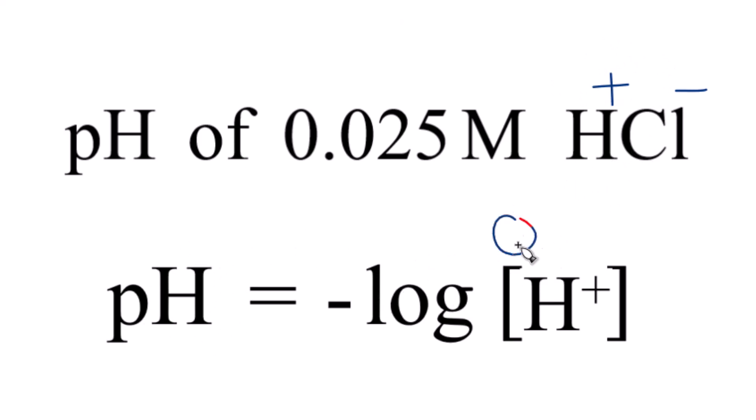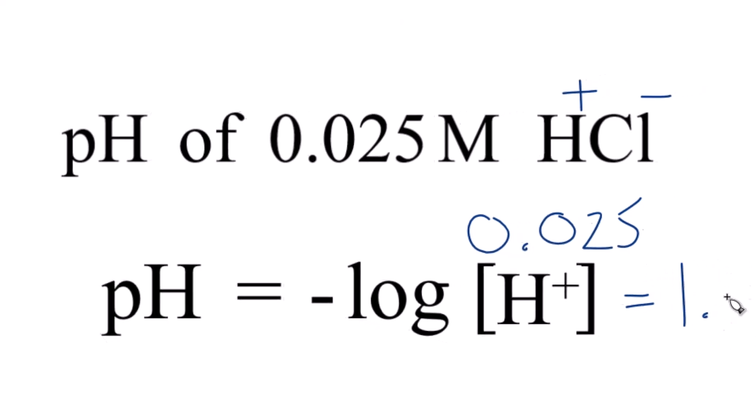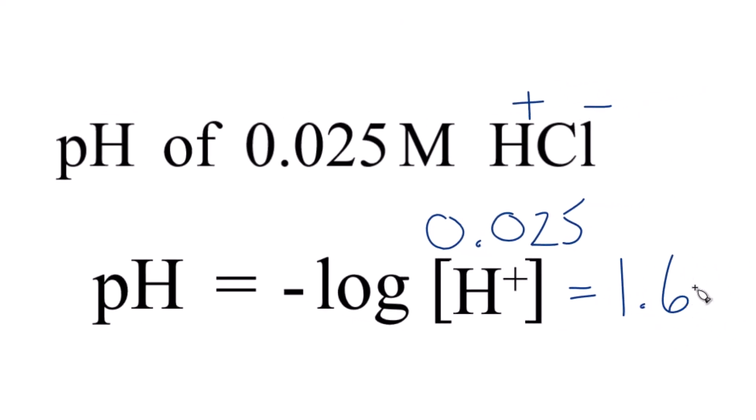So negative log of 0.025, we do that on our calculator, we get 1.6. So 1.6 is the pH of the 0.025 molar solution of hydrochloric acid.